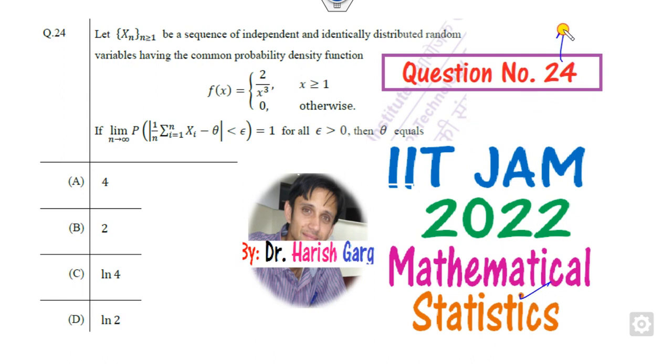Today we will discuss question number 24 which is described here. What is given to you if Xₙ's, that is the sequence of Xₙ with independent and identically distributed, that is the simple IID is given to you.